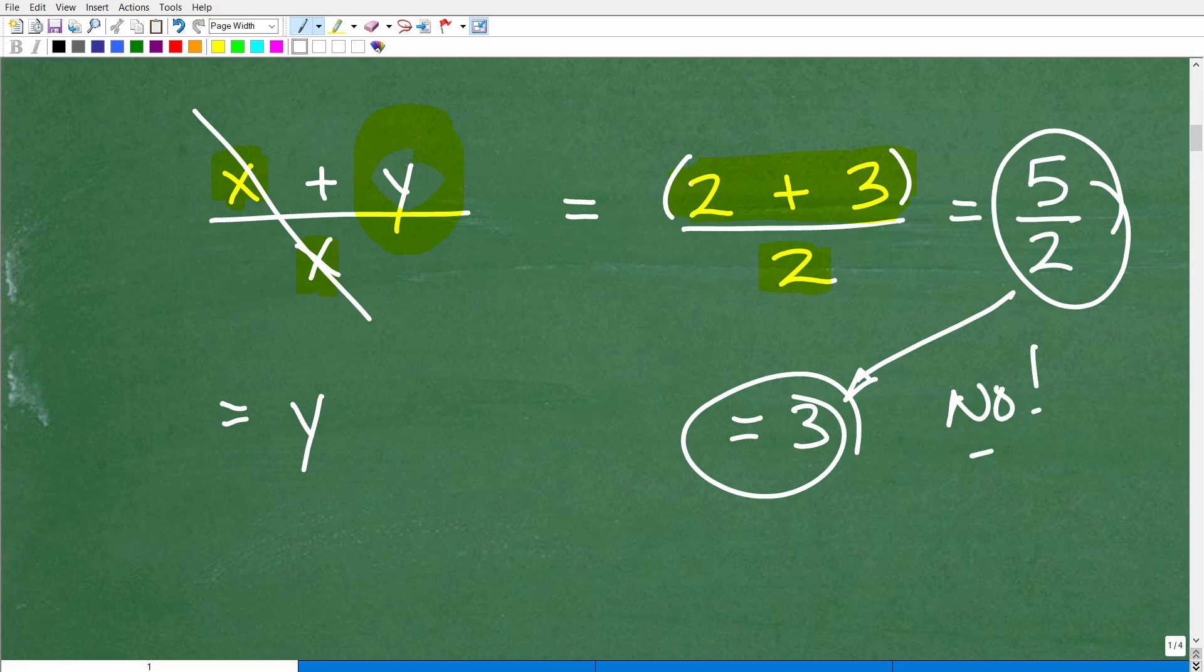Okay. So we have 5 divided by 2 is the actual answer. 2 plus 3 over 2 is 5 over 2. Is 5 over 2 the same thing as 3? Well, of course, the obvious answer is no. Okay. So we cannot cross cancel. Okay. And I'm going to talk to you when you can.